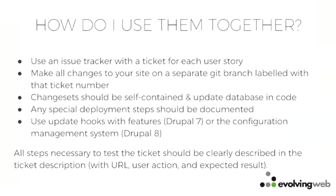How do I use them together? You need some sort of issue tracker — a ticket for every user story with a number you can refer to. You'll have a way to say a specific ticket is being worked on by a specific person. You will start working on those tickets by making a separate branch in Git. The name of that branch should have the number of the ticket in it — otherwise how are you going to know which one is which? Your changes need to be self-contained.